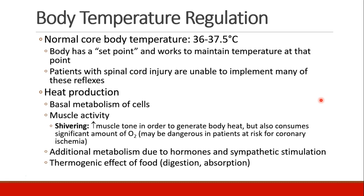The last topic we'd like to cover is body temperature regulation. The normal core body temperature is somewhere in the range of 36 to 37.5 degrees centigrade. The body has a set point and works very hard to maintain temperature at that set point. Patients who have spinal cord injury may be unable to implement a lot of these reflexes, which is one of the reasons they need extra help staying warm.